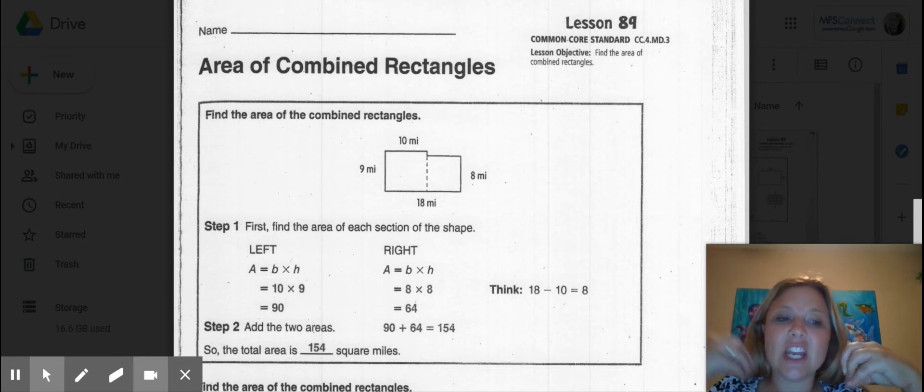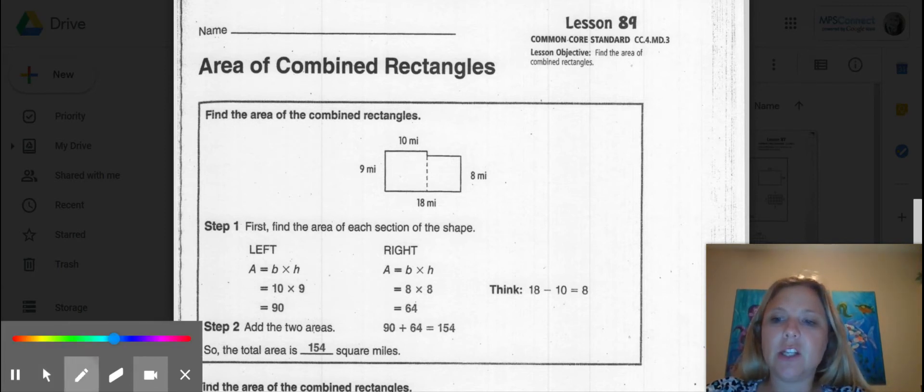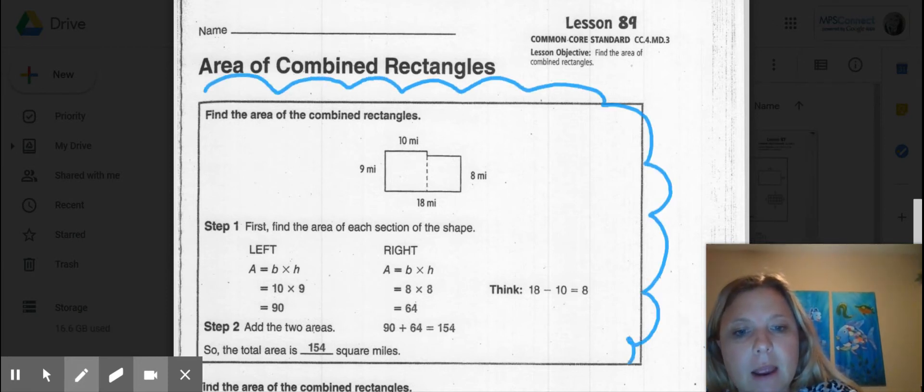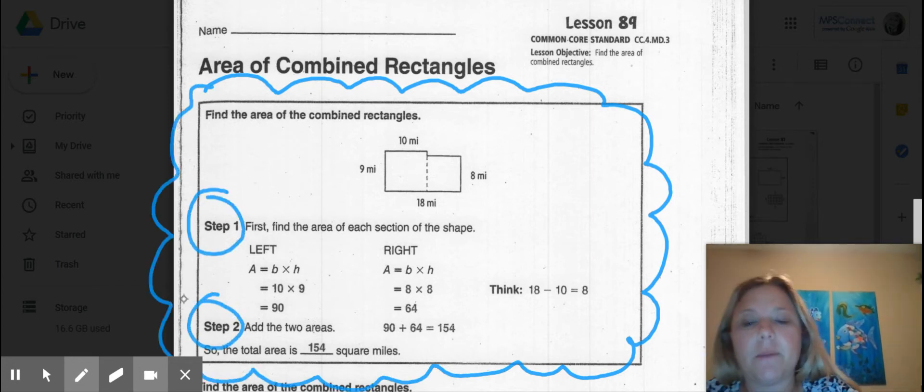In this lesson, you're going to have two different shapes and you're going to combine your knowledge about the two different shapes into one answer. So what exactly am I talking about? Let me go into this information. Here is your task analysis for areas combined in rectangles. Within that task analysis, it's telling you the steps: step one and step two.